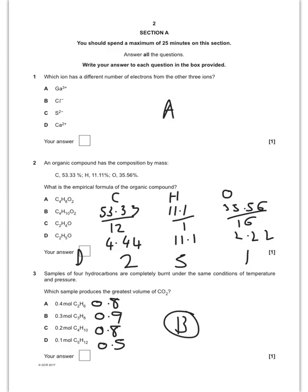For the next one I've worked out the empirical formula. Hopefully you can see the ratio is 2 to 5 to 1, and therefore the answer is D.